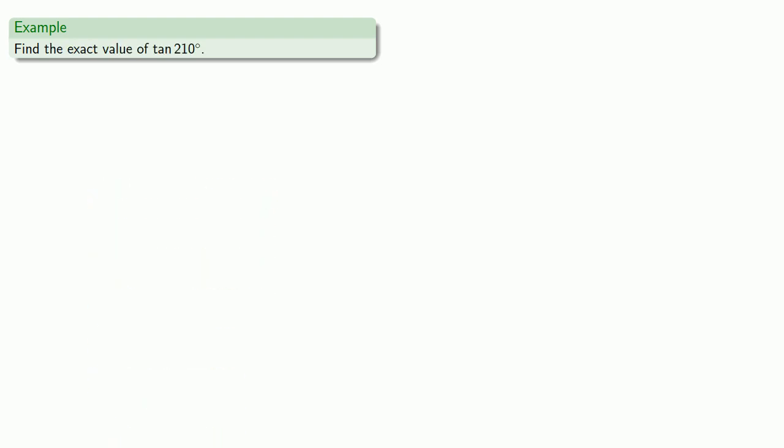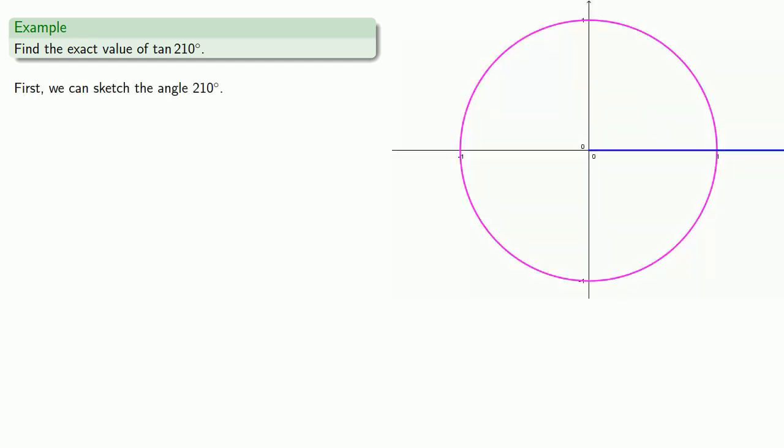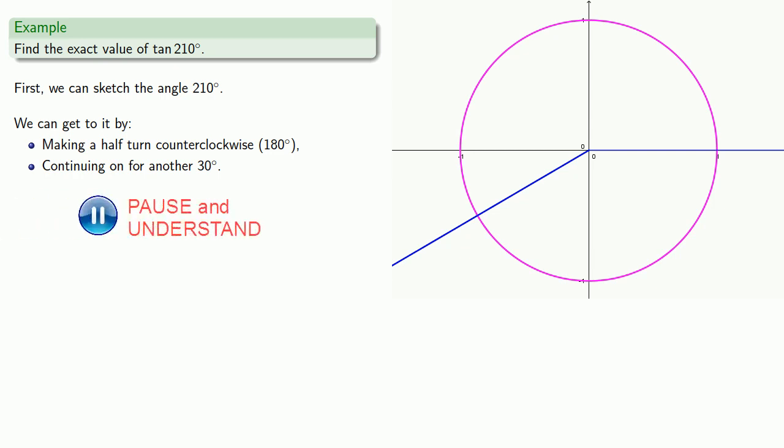How about tangent of 210 degrees? First, again, we can sketch the angle of 210 degrees, and we see that we can get to it by making a half turn counterclockwise, 180 degrees, and continuing on for another 30 degrees. So the reference angle is 30 degrees, and the angle is in the third quadrant.